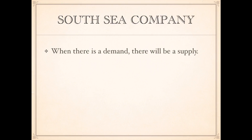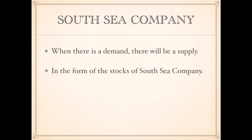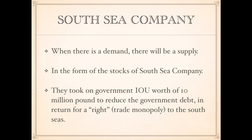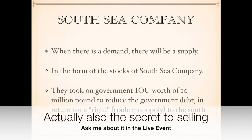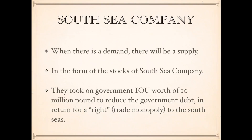When there's demand, there's supply — everybody wants to own shares, so capitalism automatically provides: enter the South Sea Company. Stocks with a story behind them naturally have a higher price; people tend to want them more. This company had a story — they took on government IOUs worth 10 million pounds to reduce the government debt, in return for the right to a trade monopoly to the South Seas. Nobody really understands this, but it's like any stock market deal — you don't understand the contract but you know the story, and everybody chases it.